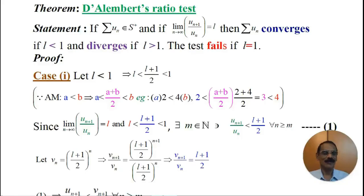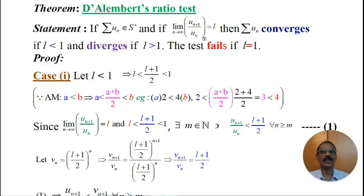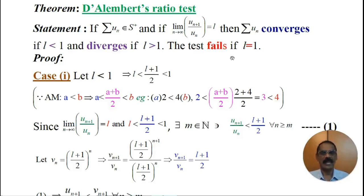We shall now state and prove D'Alembert's ratio test. D'Alembert's ratio test says that if series Uₙ belongs to S-plus, and if the limit of Uₙ₊₁ by Uₙ as n tends to infinity is L, then the series Uₙ converges if L is less than 1, diverges if L is greater than 1, and the test fails if L is equal to 1.